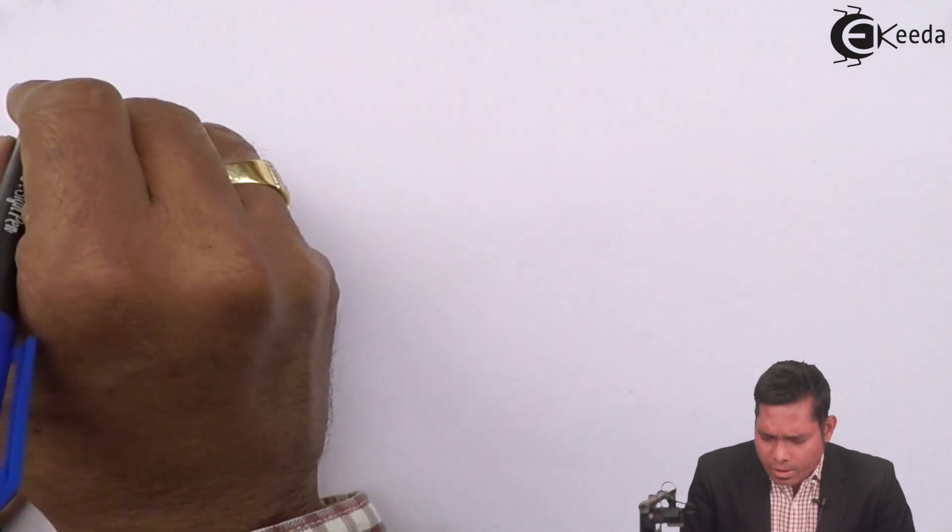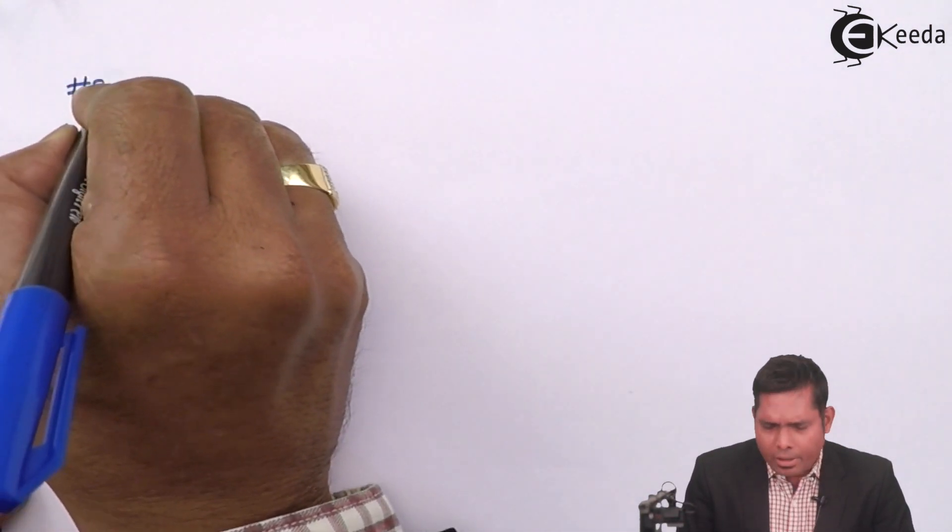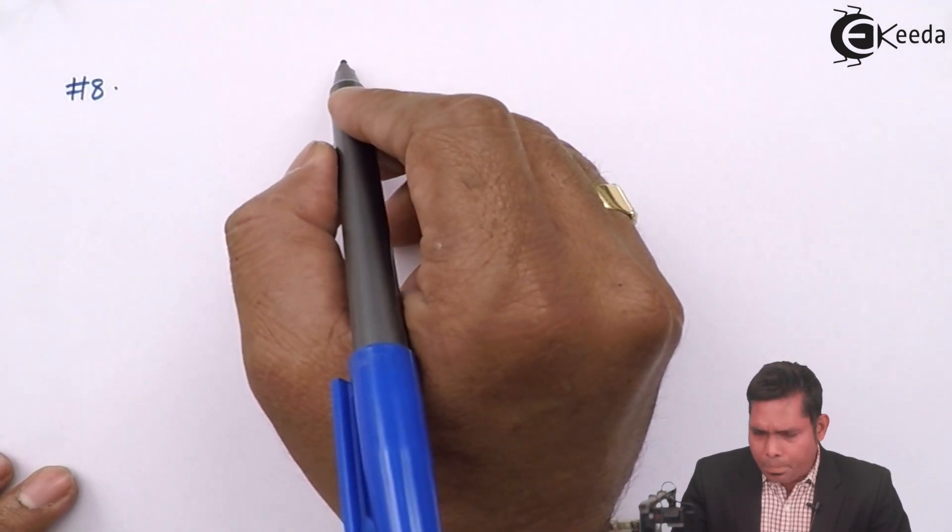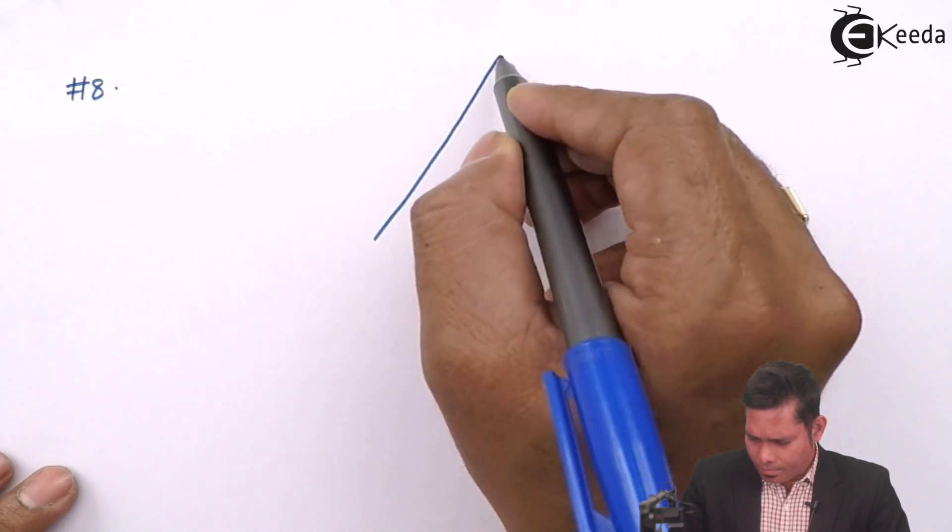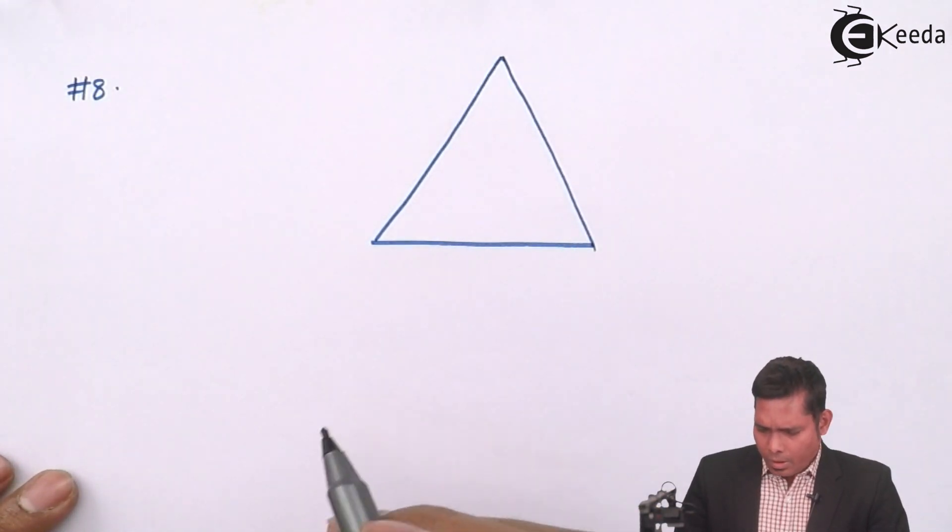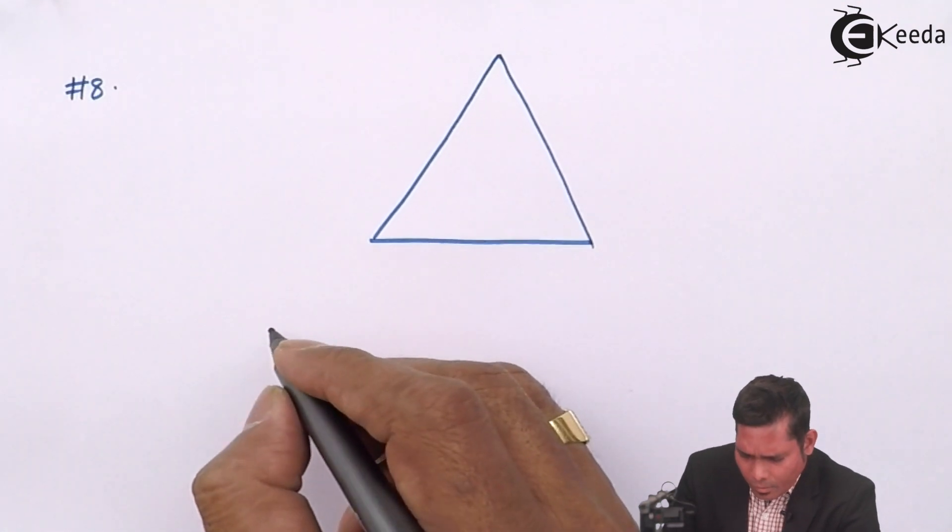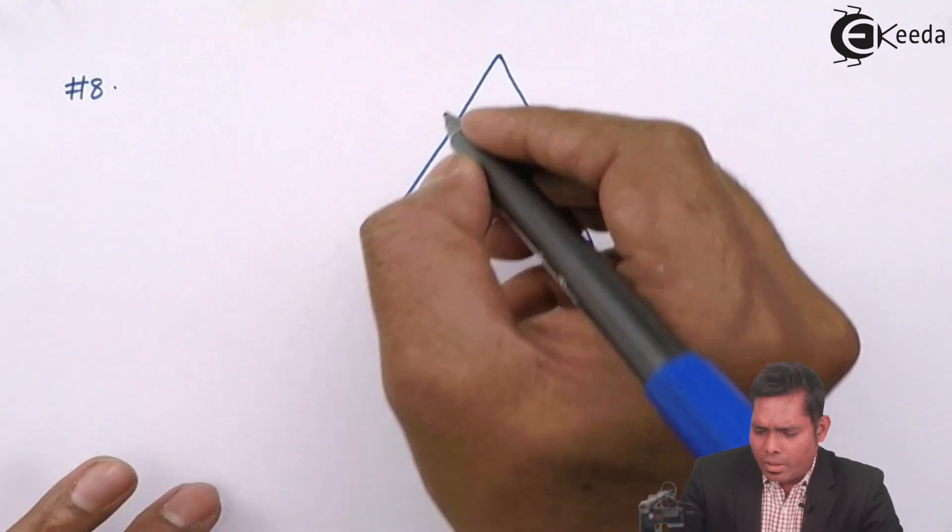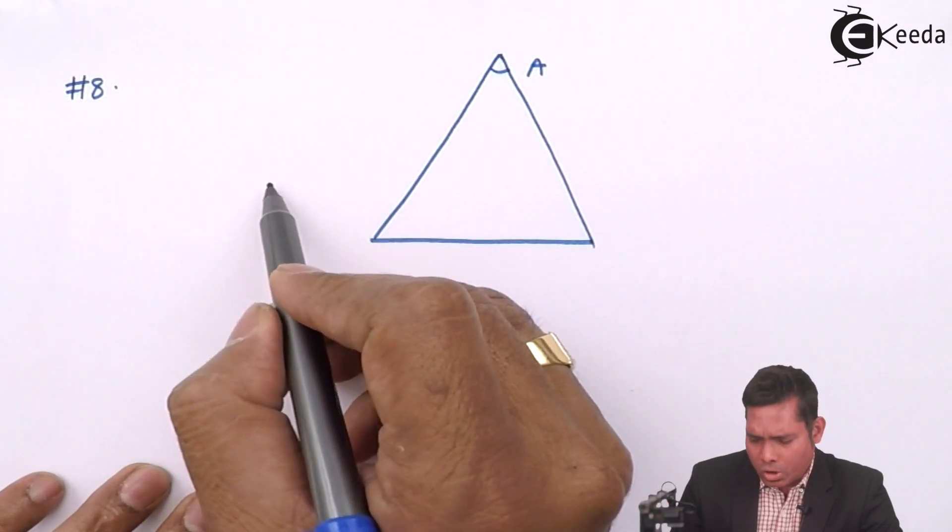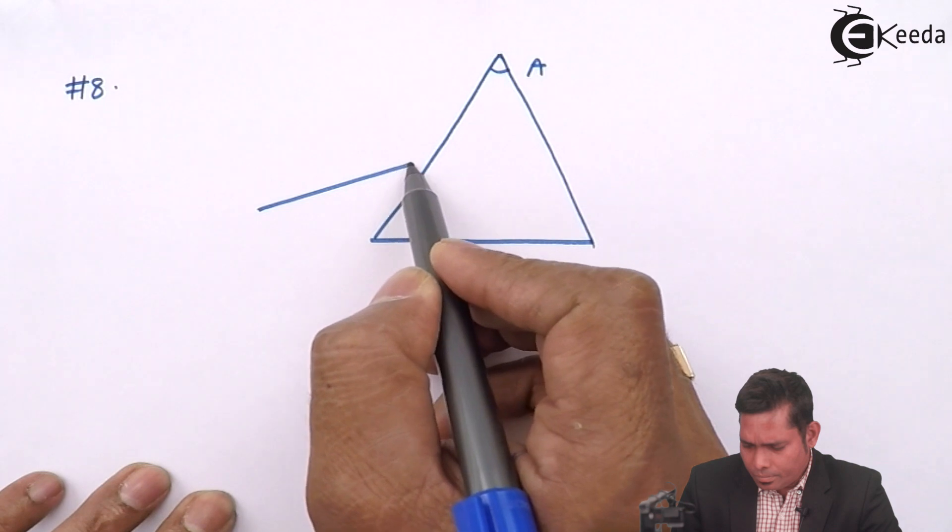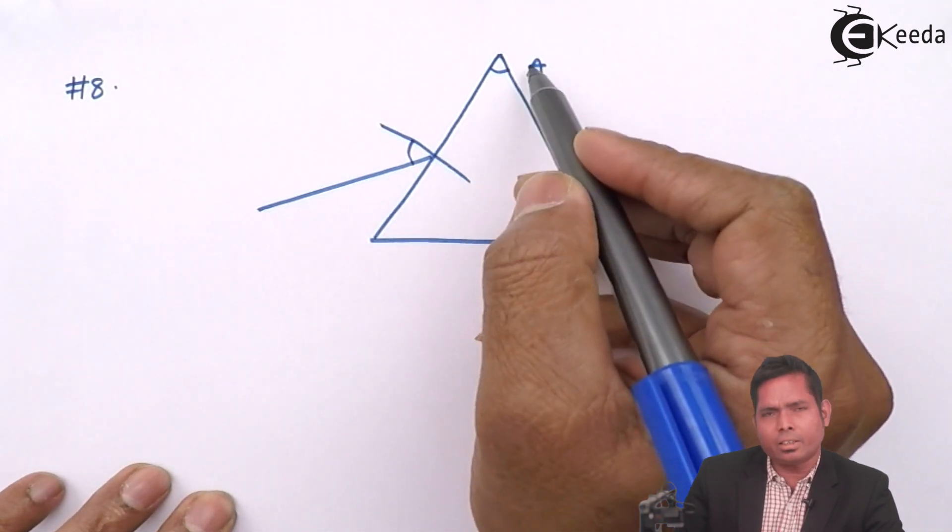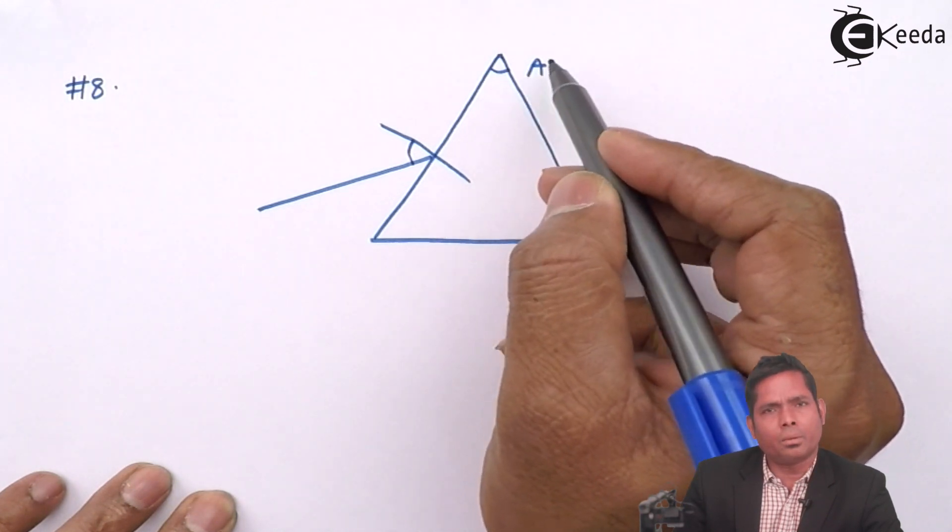Let's start question number 8. It is a very interesting question. It says that there is a prism, and the angle of incidence at one face is double the angle of the prism.